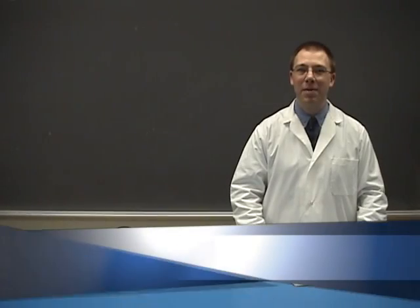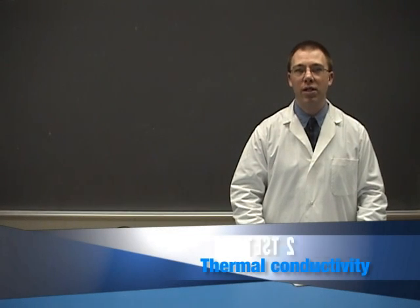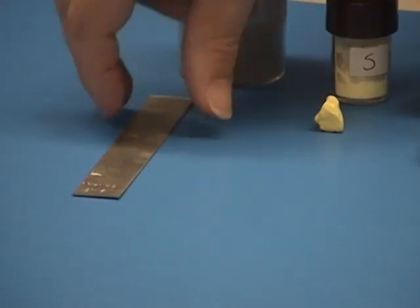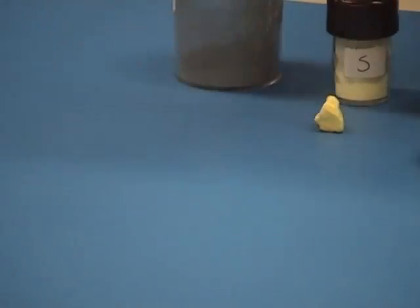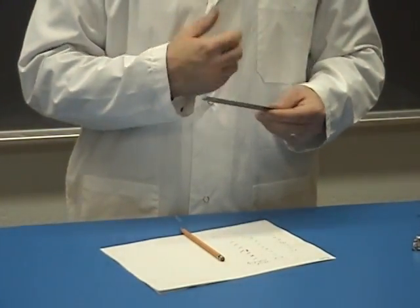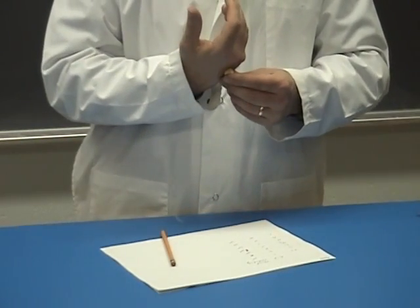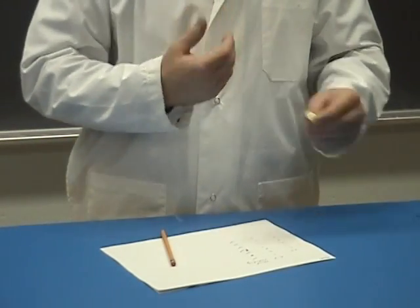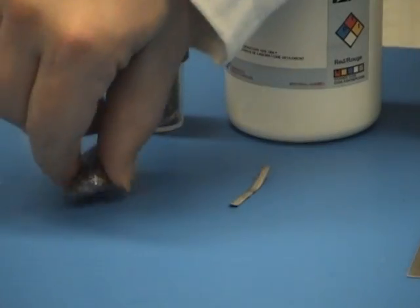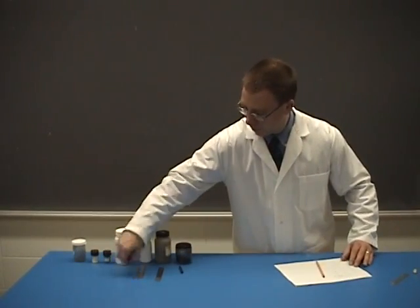Thermal conductivity can be observed by our sense of touch. If an object feels cold to the touch while at room temperature, then it draws heat from the skin. Verify thermal conductivity by using the back of your hand to check the temperature of each of the objects, and record your results.